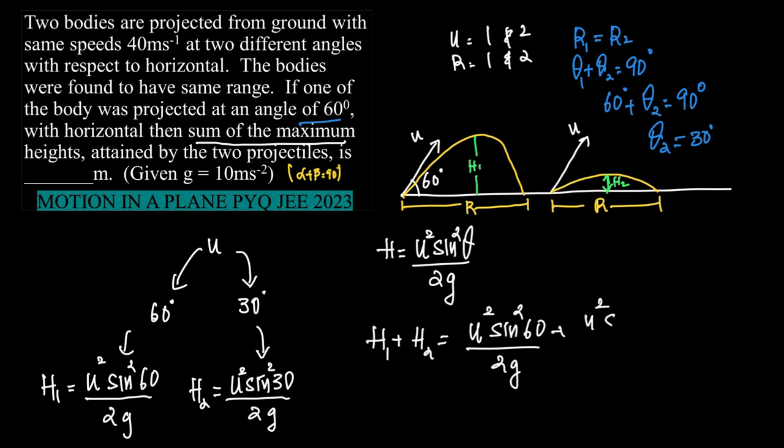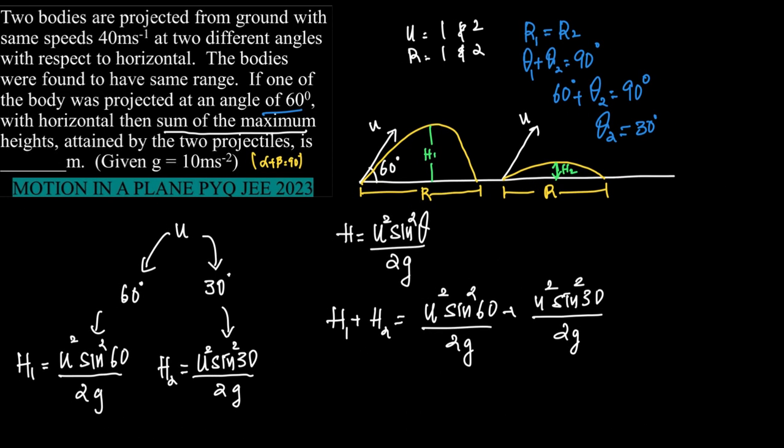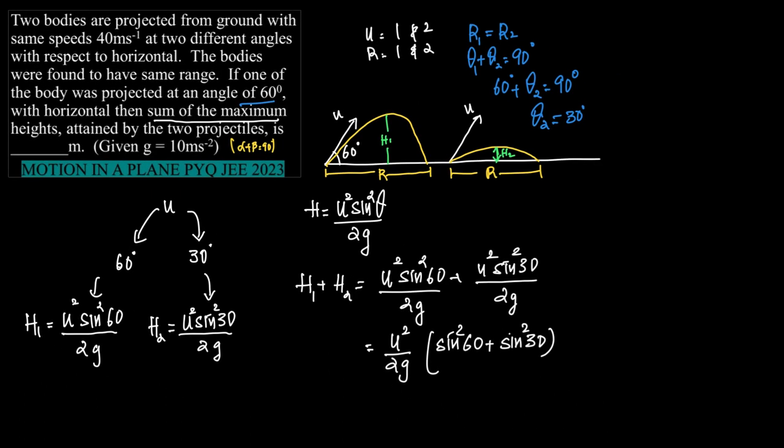Now if we take u square by 2g common, what's left is sine square sixty plus sine square thirty, right?